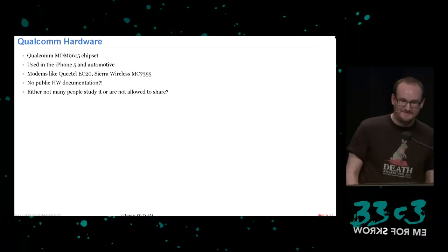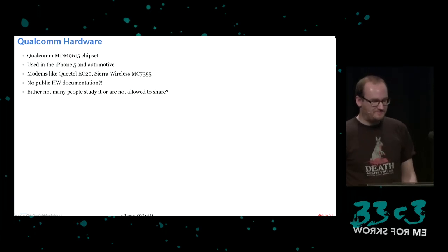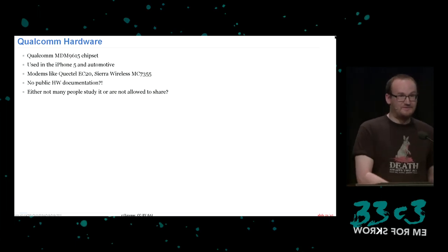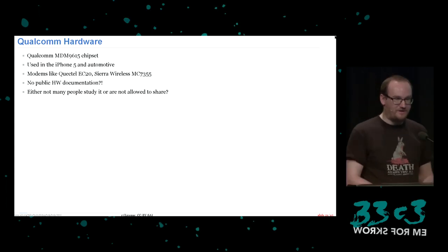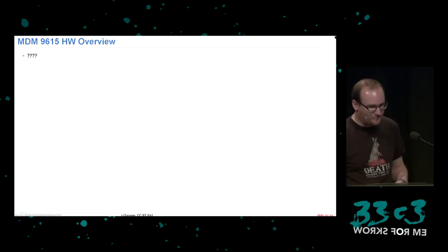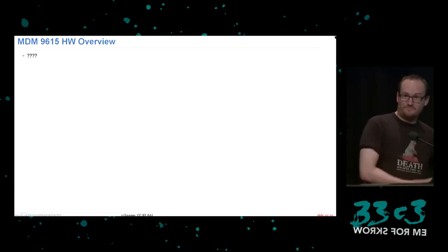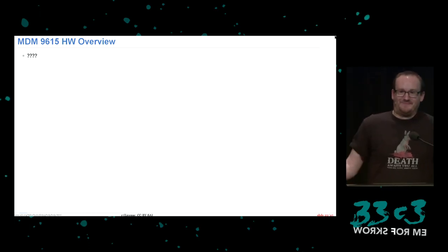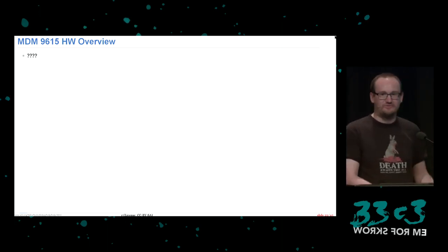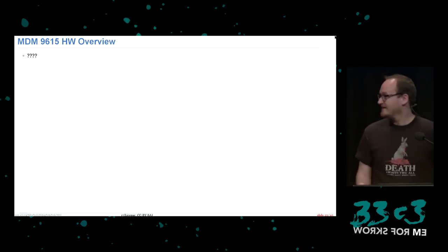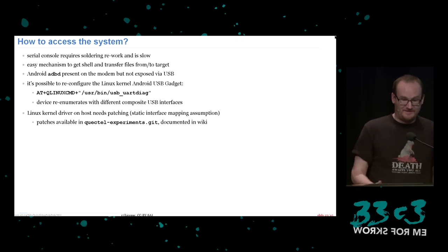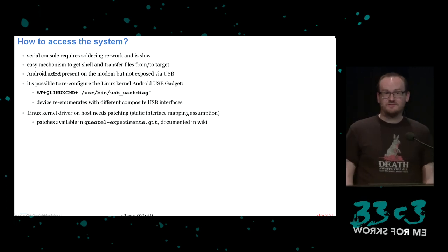Now let's briefly look at the hardware. It's a Qualcomm MDM chipset, mentioned in iPhones, and possibly in your future car. From a free software perspective, it runs Linux and talks to hardware, but there is absolutely no documentation about the hardware anywhere on the internet — not even a block diagram. We know there's an ARM processor inside and probably a Hexagon DSP that are connected somehow, but nothing more. It's frustrating to see Linux winning even in modem devices but with no hardware documentation.